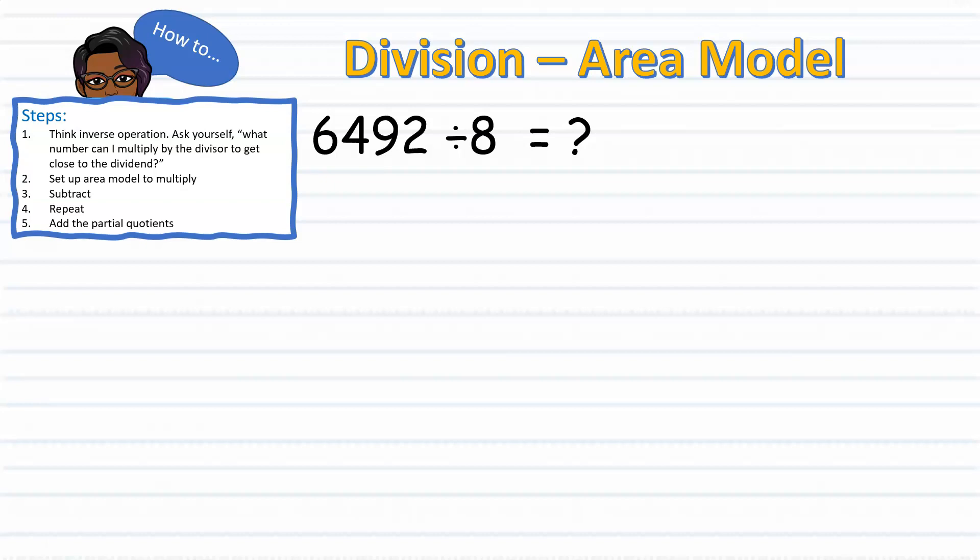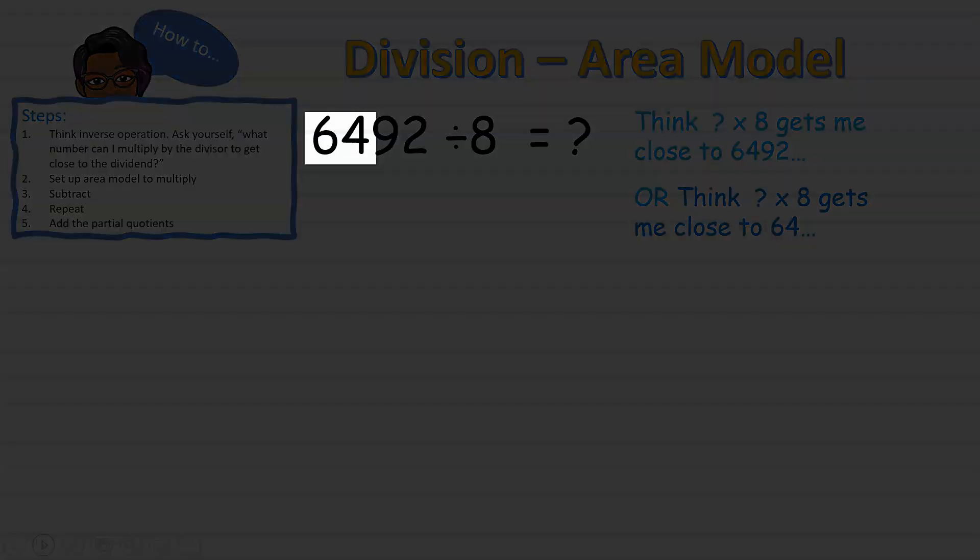So encourage your child to ask themselves, what number multiplied by 8 will get me as close to 6,492 as possible? 6,492 may be a large number for students to work with, and they may be a little intimidated, so encourage them to think in smaller chunks. Instead, think, what number times 8 gets me closer to 64?